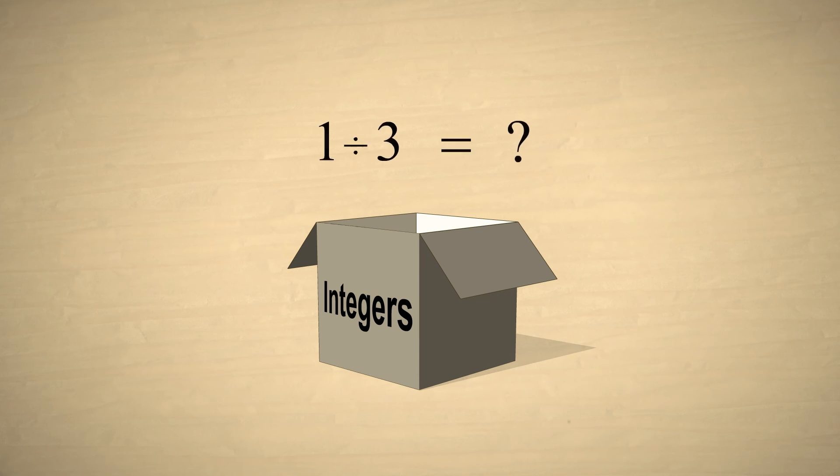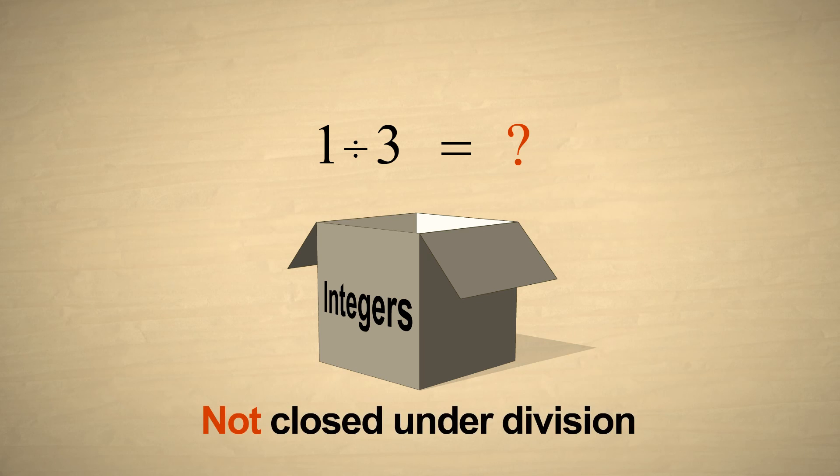However, when dividing integers, the result cannot always be represented by an integer. For example, dividing the integer one by the integer three does not produce an integer. Therefore, the integers are not closed under the operation of division.